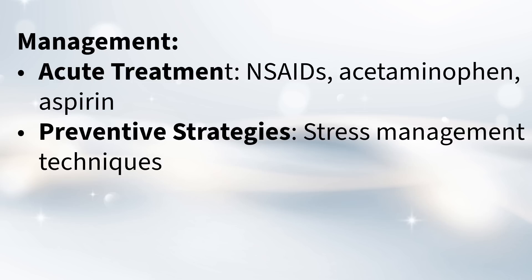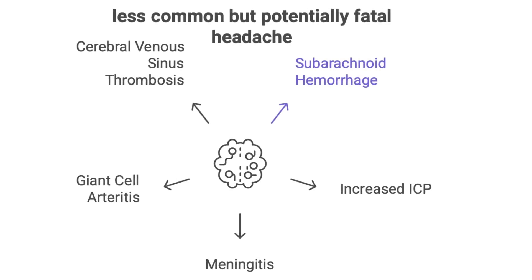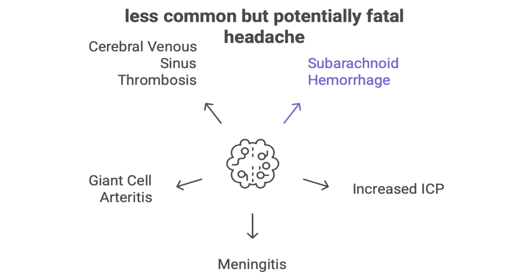Now let's get into the scarier stuff — the serious and potentially fatal causes. The guide makes it clear we really need to know about these red flags. While these are thankfully less common, recognizing the signs of these serious problems can be super important. The first one the guide goes into is a subarachnoid hemorrhage, or SAH.